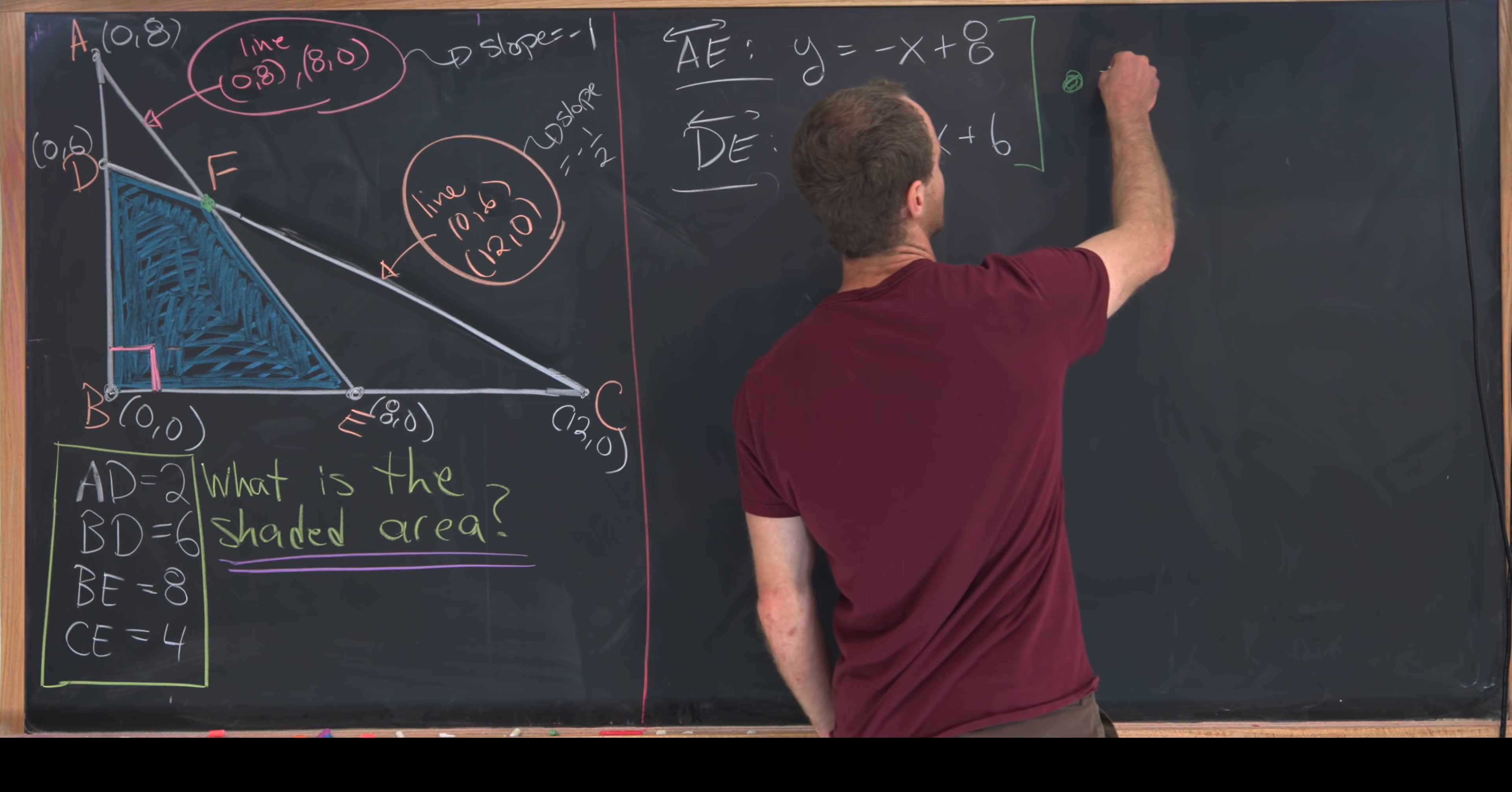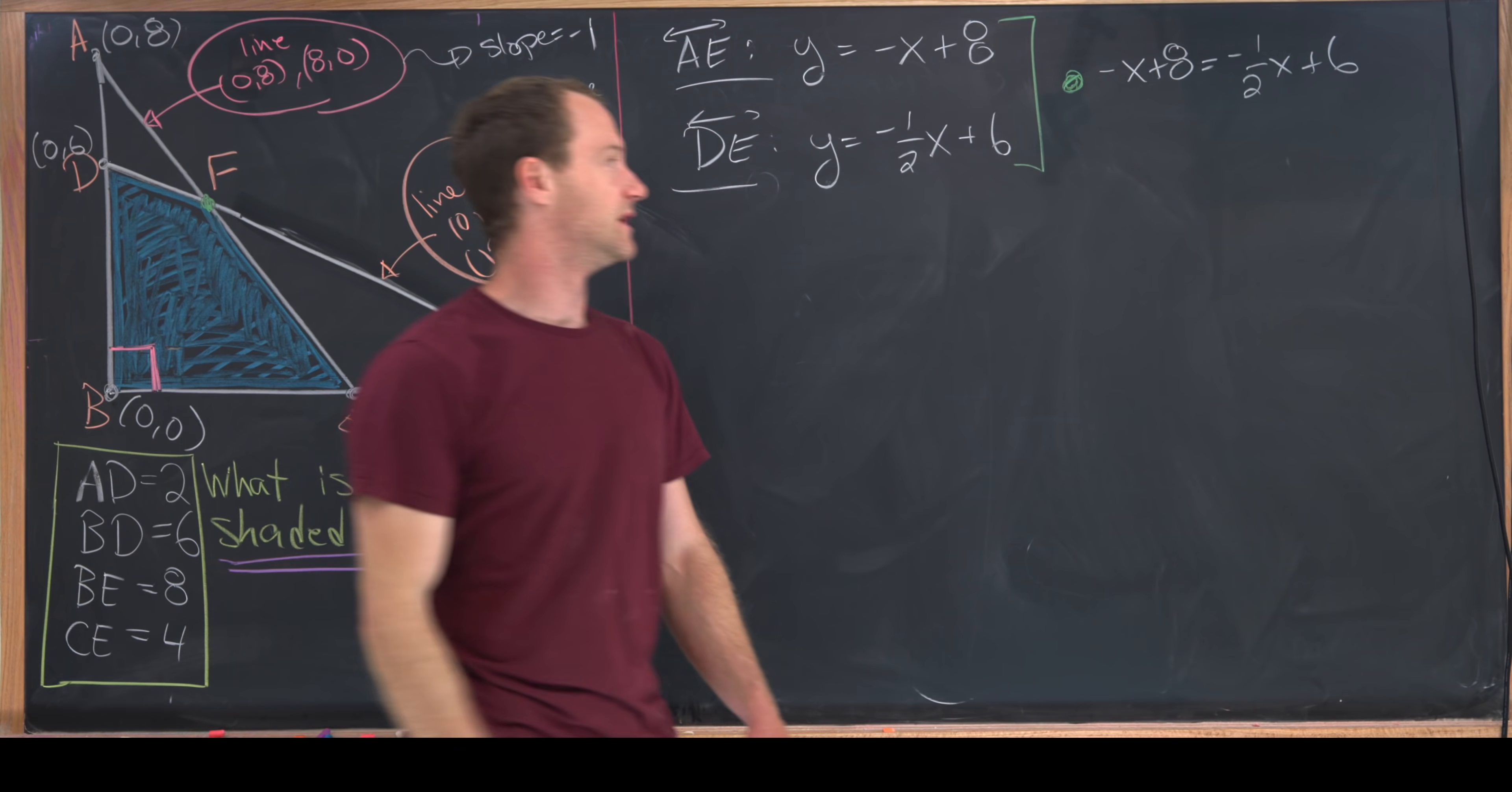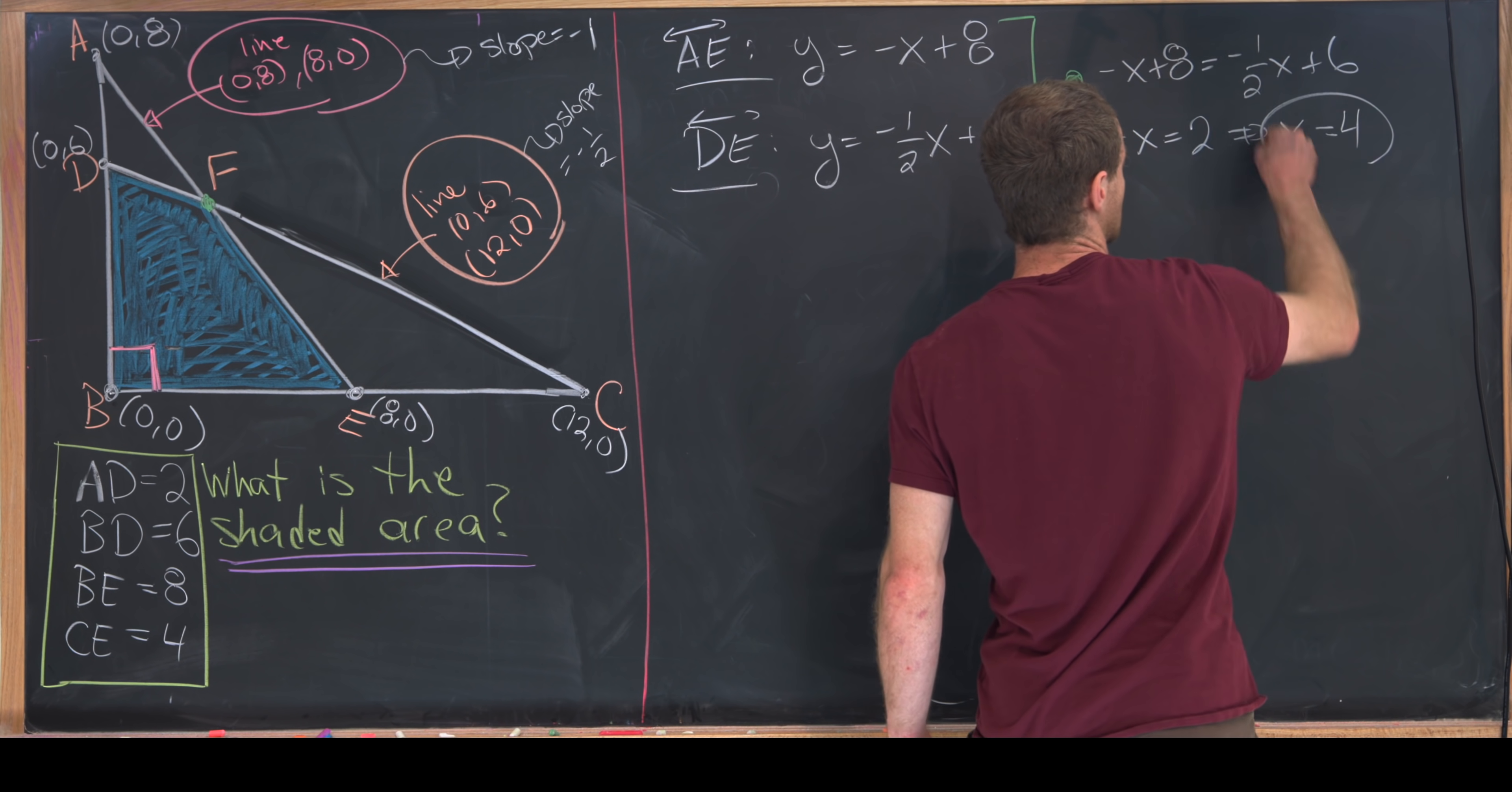Setting the y's equal to each other, we have -x + 8 = -1/2 x + 6. Then moving some things around, we'll see that 1/2 x = 2, in other words x = 4.